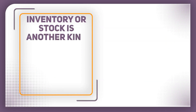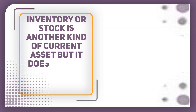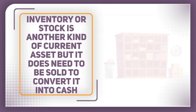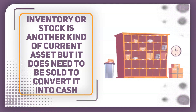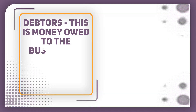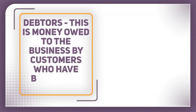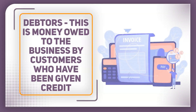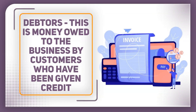Inventory or stock is another kind of current asset but it does need to be sold to convert it into hard cash. If the business needs cash quickly, it might have to reduce the selling price of the stock to get it sold and quickly get some cash in the bank. The other main type of current asset is what we call debtors, and this is money owed to the business by customers who have been given credit — basically been given time to pay their bill. This money will be received when the customer eventually pays up but it's still an asset to the business. The business owns this debt.